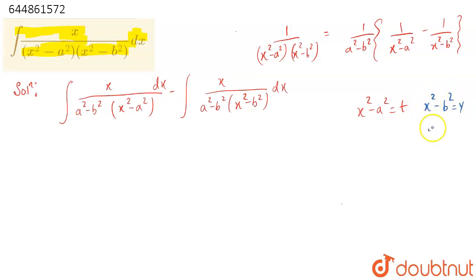Differentiating both, we get 2x dx = dt and 2x dx = dy.